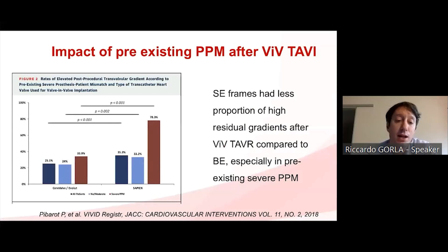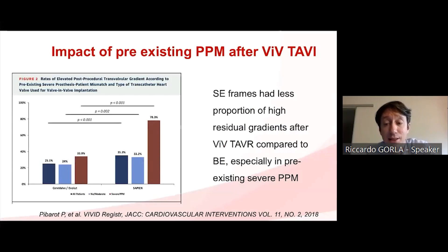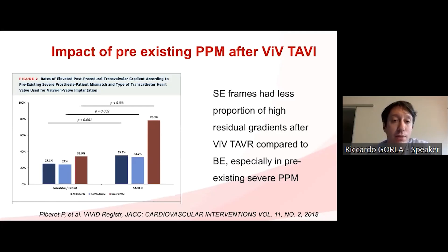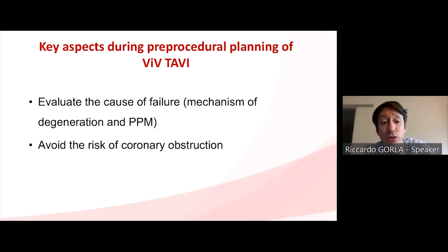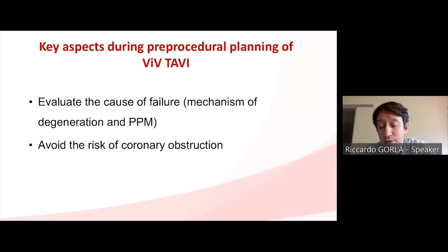These authors also found that using a self-expanding device in patients with pre-existing severe PPM helped to improve hemodynamics after valve-in-valve TAVR. Next, you have to estimate the risk of coronary obstruction, which is very important in this kind of procedure.